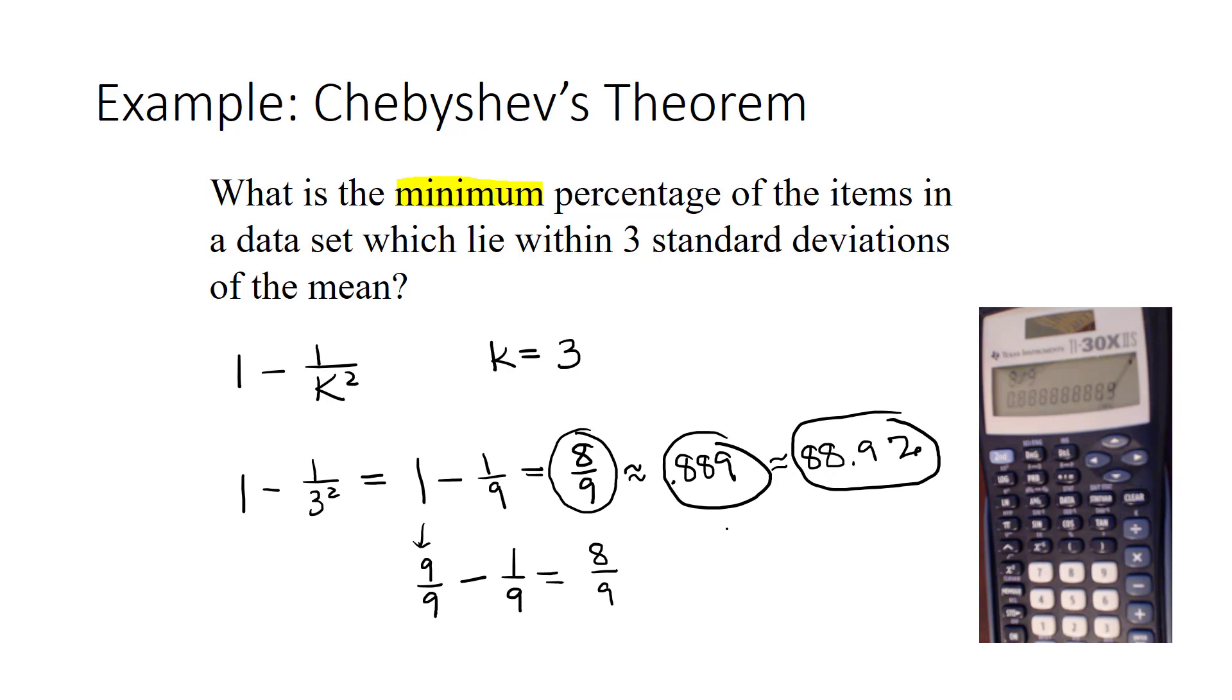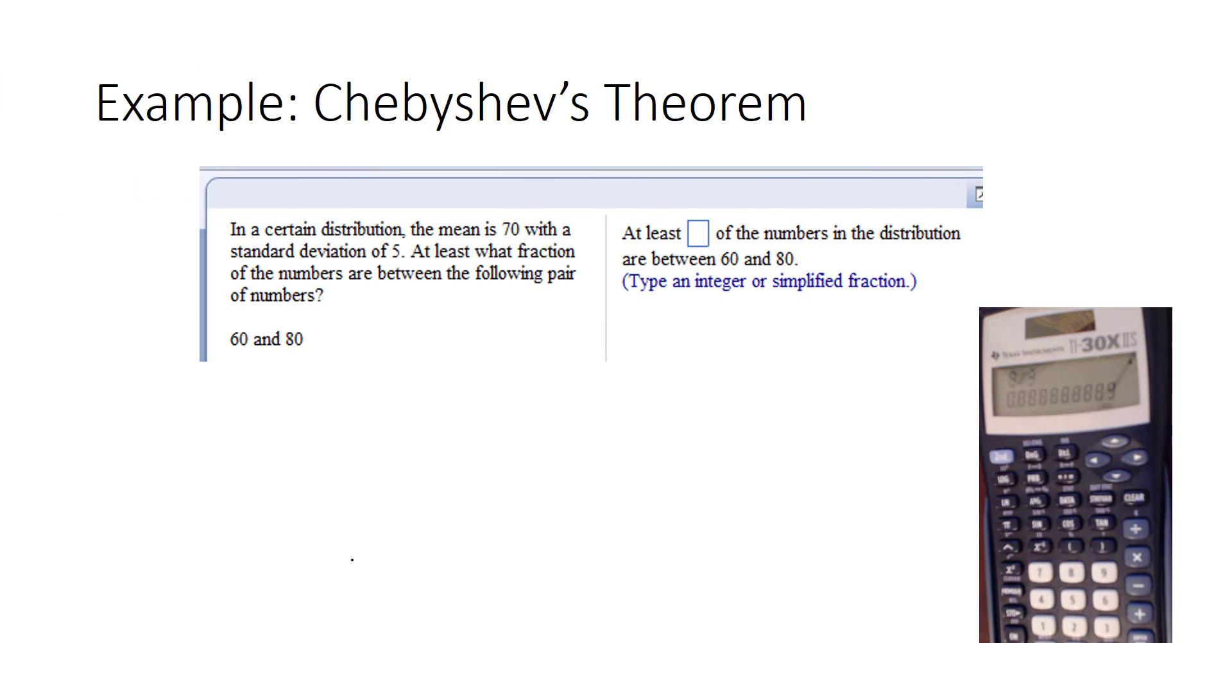Remember, this is the minimum amount of the data. It's possible 100% of the data lies within three standard deviations of the mean, but we know for sure, regardless of the distribution of the data, that at least 88.9% of it does. Let's look at an application.